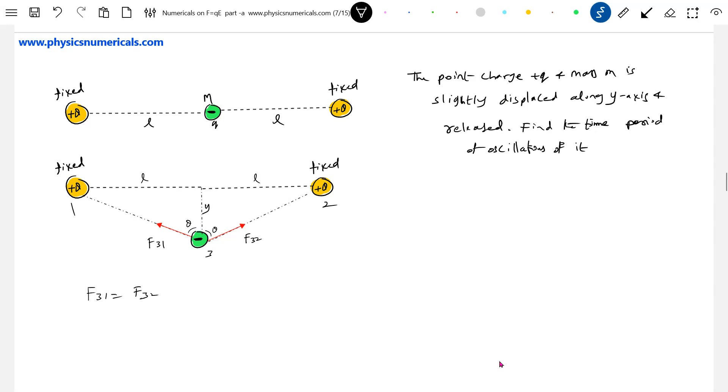Because the point charge q is displaced symmetrically, placed equidistant from both the fixed charges, this theta should be equal and this distance is equal to this one. So F31 is equal to F32. Then the resultant force acting on the system will be -ma = 2F31 cos theta.